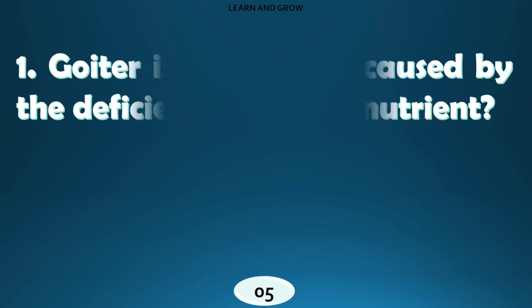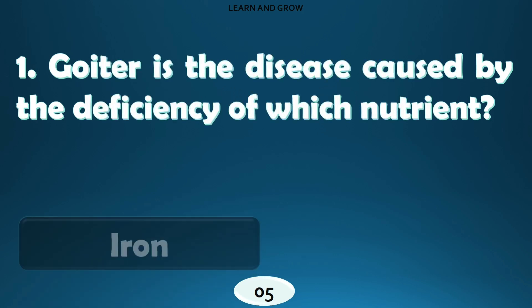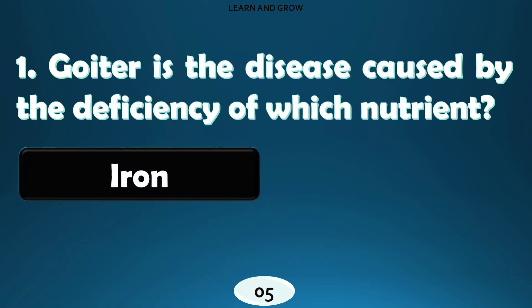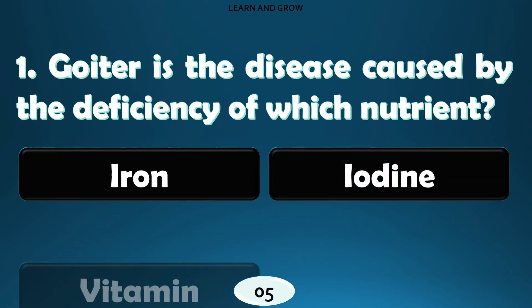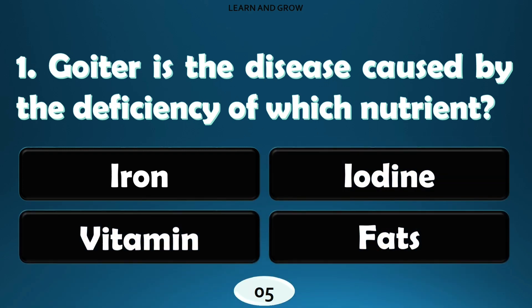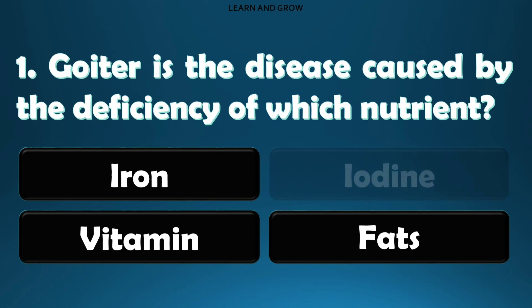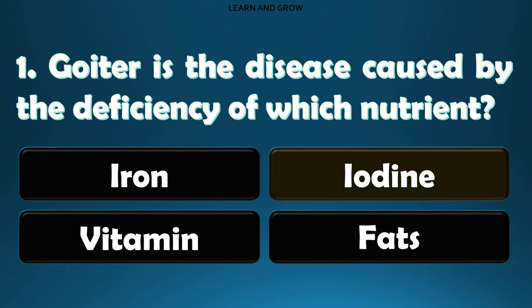Goiter is the disease caused by the deficiency of which nutrient? The right answer is option B: iodine.